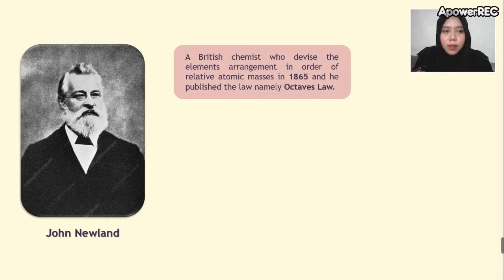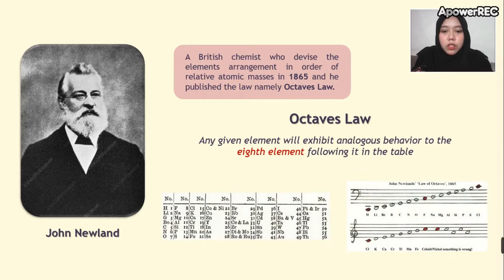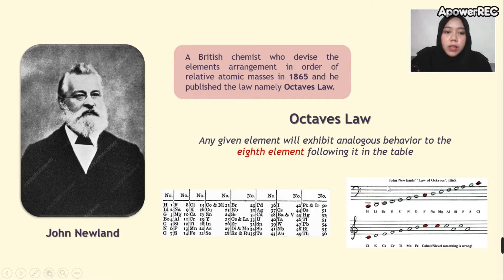The Law of Octaves stated that any given element will exhibit analogous behavior to the eighth element following it in the table. He arranged elements in increasing order of atomic masses and found that every eighth element had similar properties to the first, comparing this to octaves in music. However, this only worked up to calcium out of 56 elements, after which elements did not show similar properties. Later, several new elements not featured in the Newlands classification were also discovered.